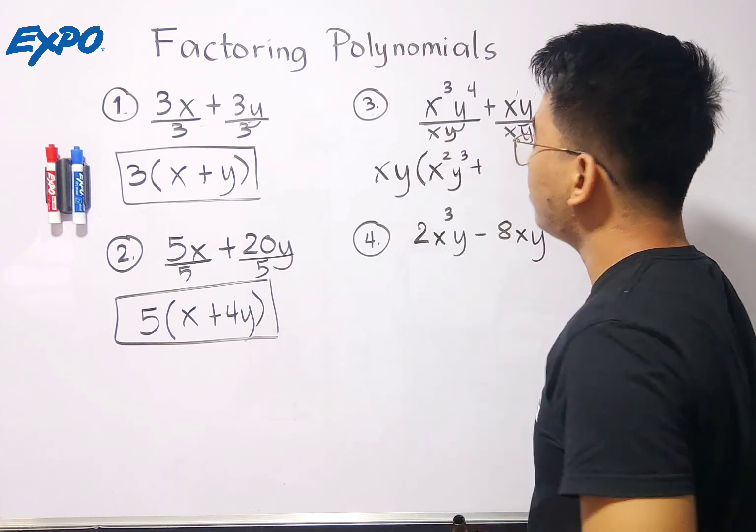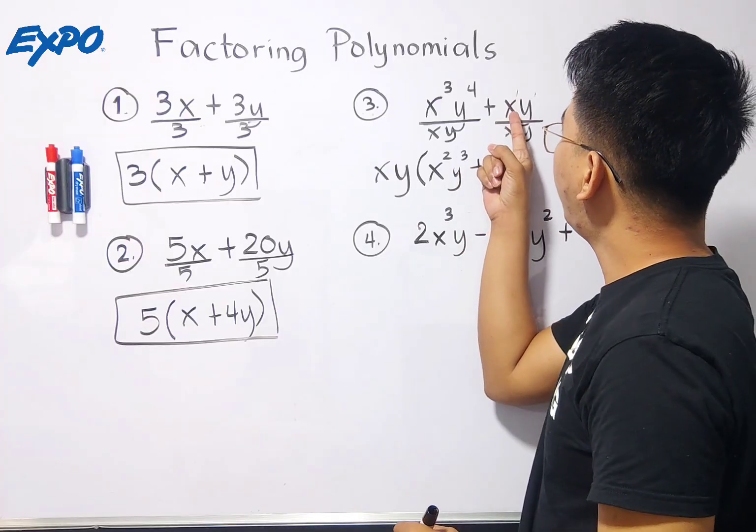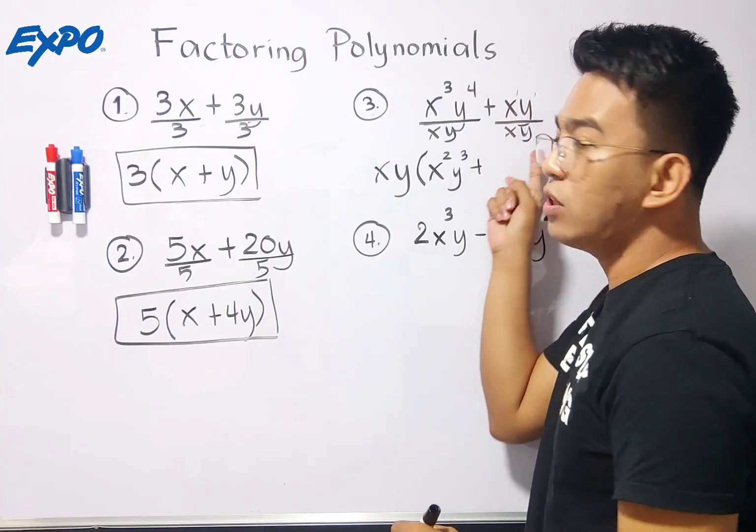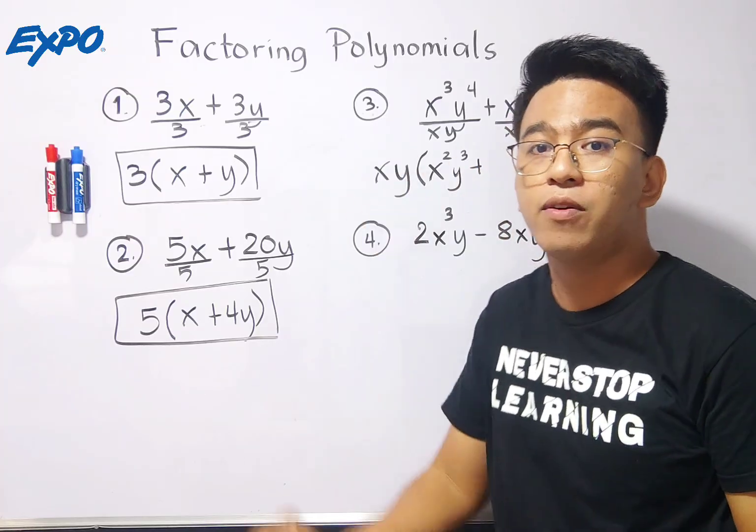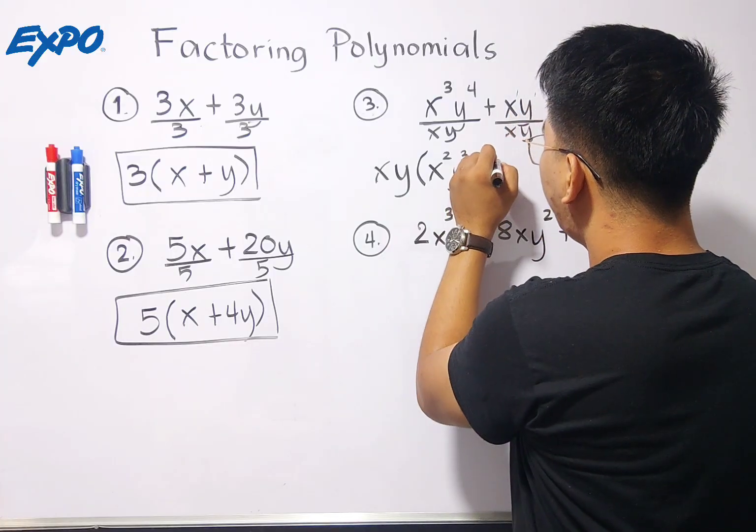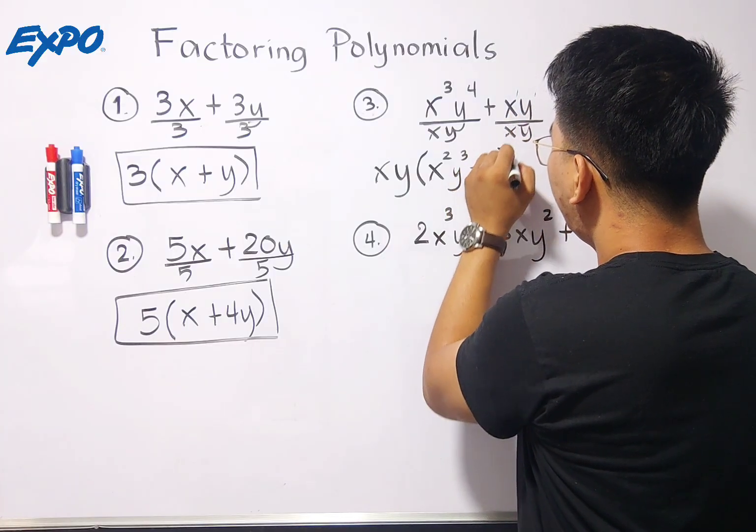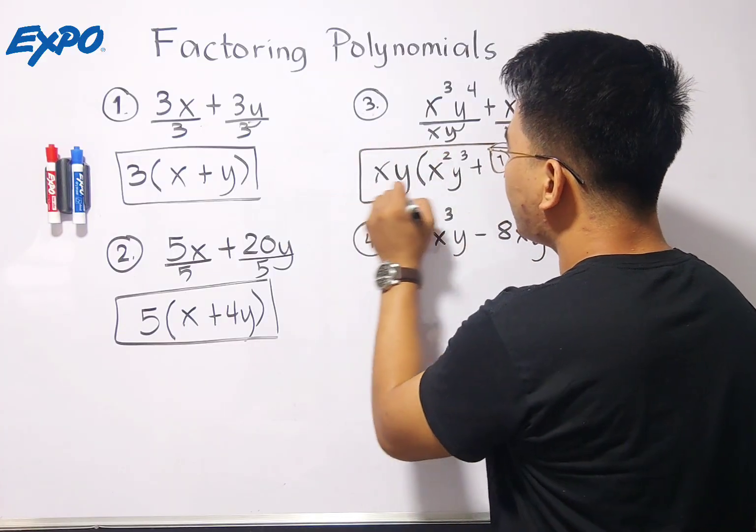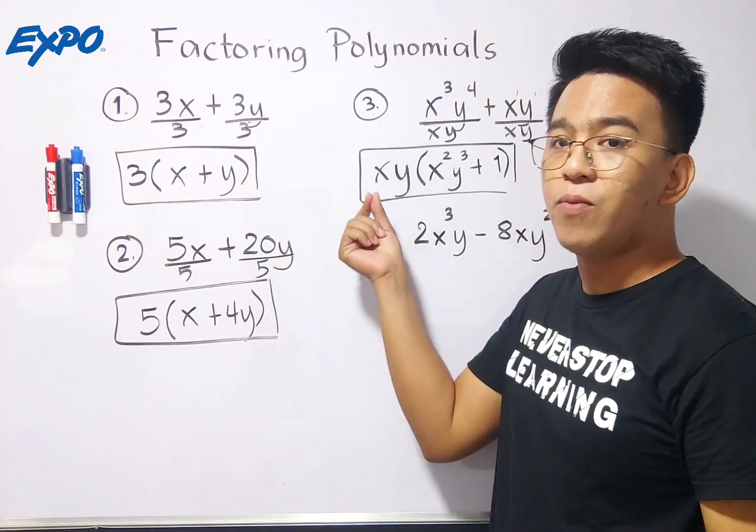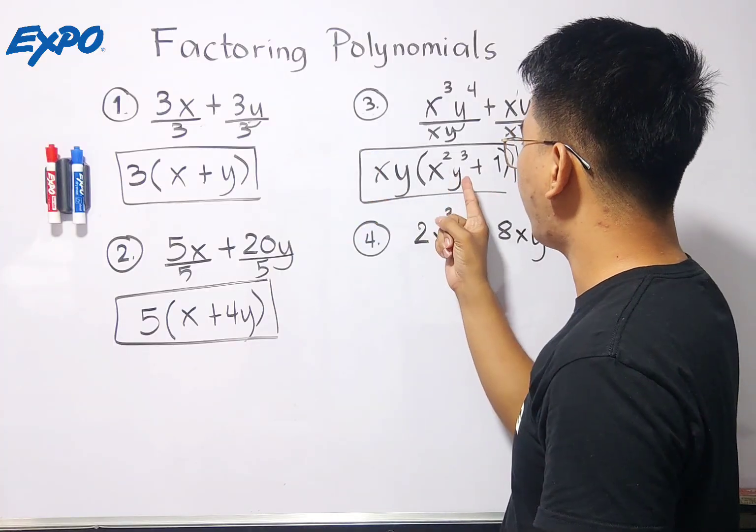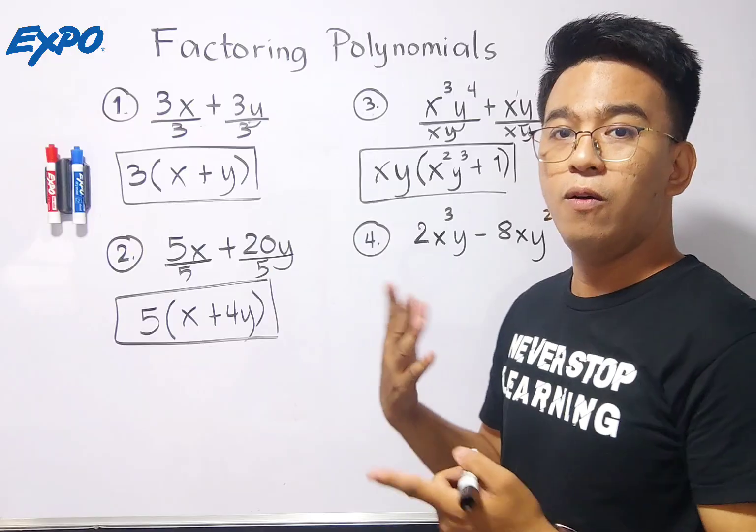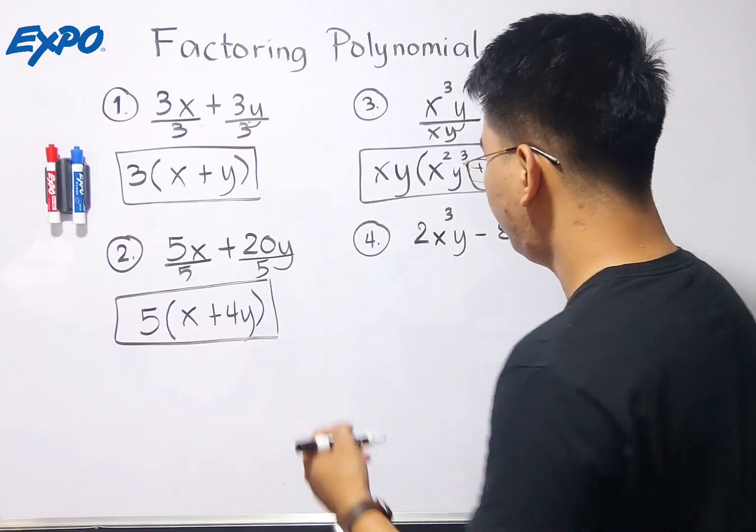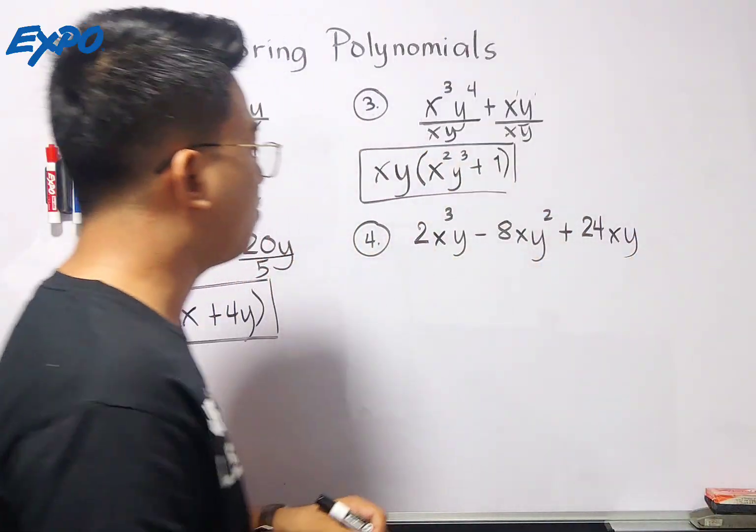Plus, here, we have xy over xy. Since the numerator and denominator are equal, meaning that is simply equal to 1. Therefore, the factors of number 3 is simply xy times x squared y cubed plus 1. That's it, guys.